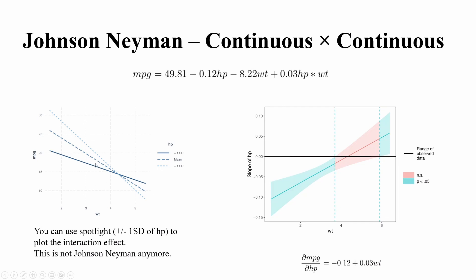So you have three lines at the horsepower, three key points in horsepower, and then plot the slope with respect to the weight. So you can plot this interaction but this is no longer Johnson-Neyman anymore. This is traditional spotlight analysis.